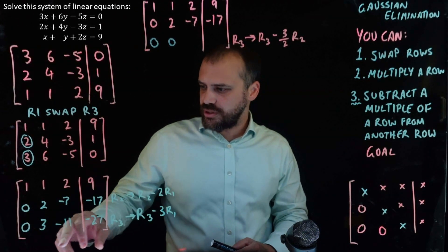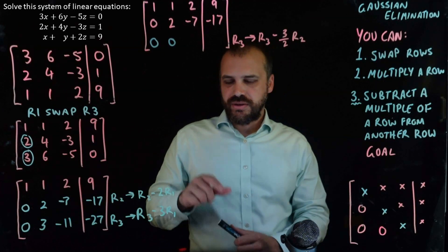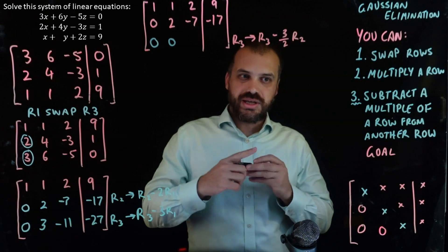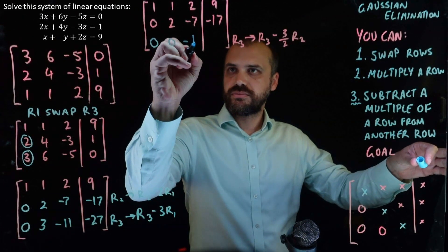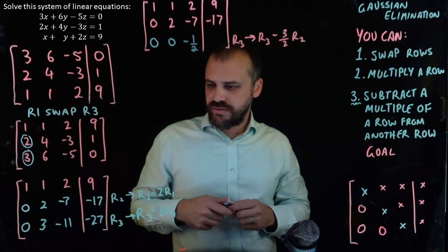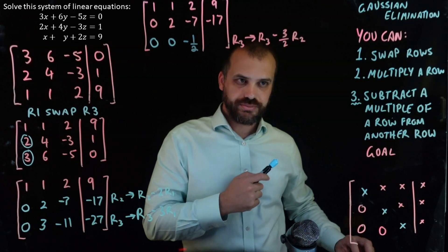So, negative 11 minus minus 10.5. That's negative 11 plus 10.5, which is negative 1.5. Okay, and then I have negative 17 times 3 on 2. All right, don't trust myself. So, I'm going to write it out.